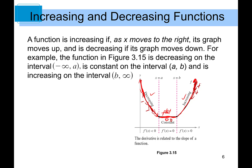In this particular example, from negative infinity to a, it's a decreasing interval. From a to b, it's a constant interval. And from b to positive infinity, it's an increasing interval.